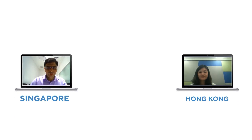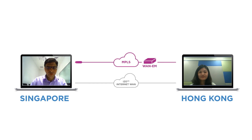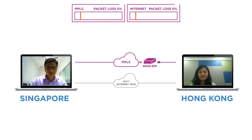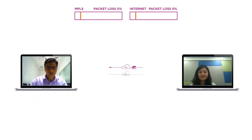Now for a real-life example: Naveen works in Singapore and is video conferencing with Nora in Hong Kong. The sites are connected by MPLS and ISO Internet WAN with a 10% packet loss threshold. Going live to Naveen and Nora.